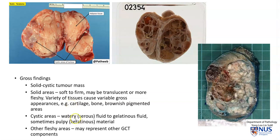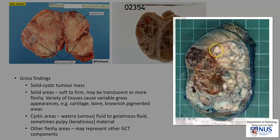In the cystic areas, the fluid can be watery or serous, or it can be thicker and more gelatinous, because sometimes the lining epithelium is mucinous in nature. And sometimes the material in the cyst locules can be pulpy and grayish, which represents keratinous material. There may be other fleshy areas which may represent other germ cell tumor components. In this particular case, these whitish areas represent the teratomatous component — we can see some cyst locules and some pulpy material, which represents keratinous material.